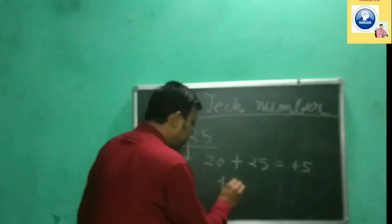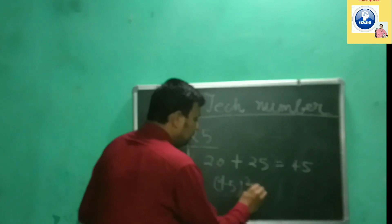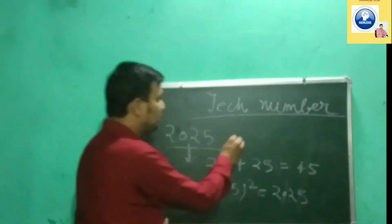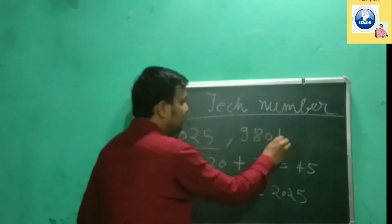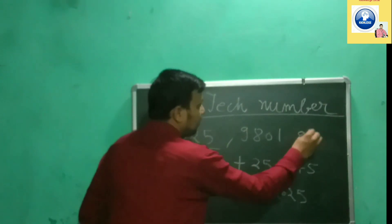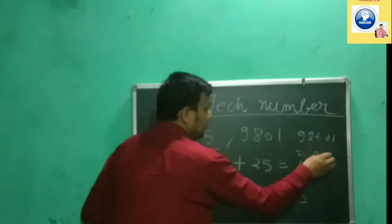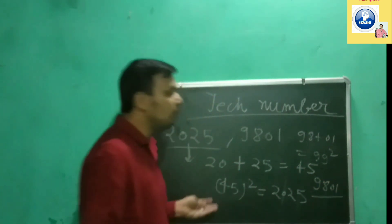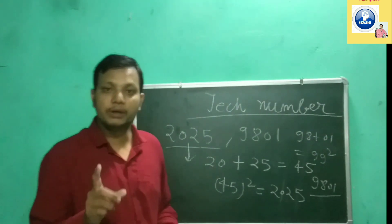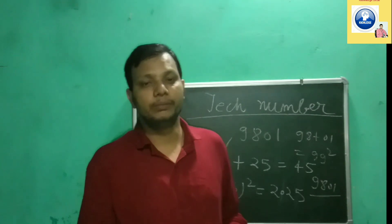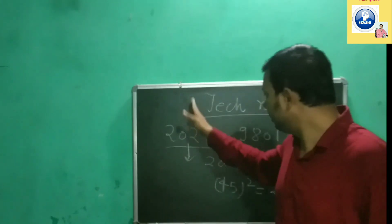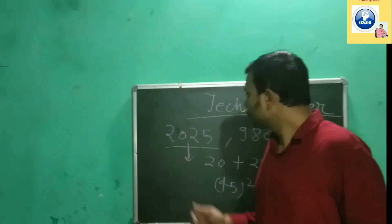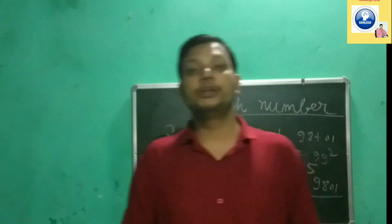When you square 45, you get 2025, which is the number itself — this is what a Tech Number is. Another example: 9801. Adding 98 and 01 gives 99, and squaring 99 gives 9801 again. Tech numbers must have an even number of digits and must be split equally from the middle.